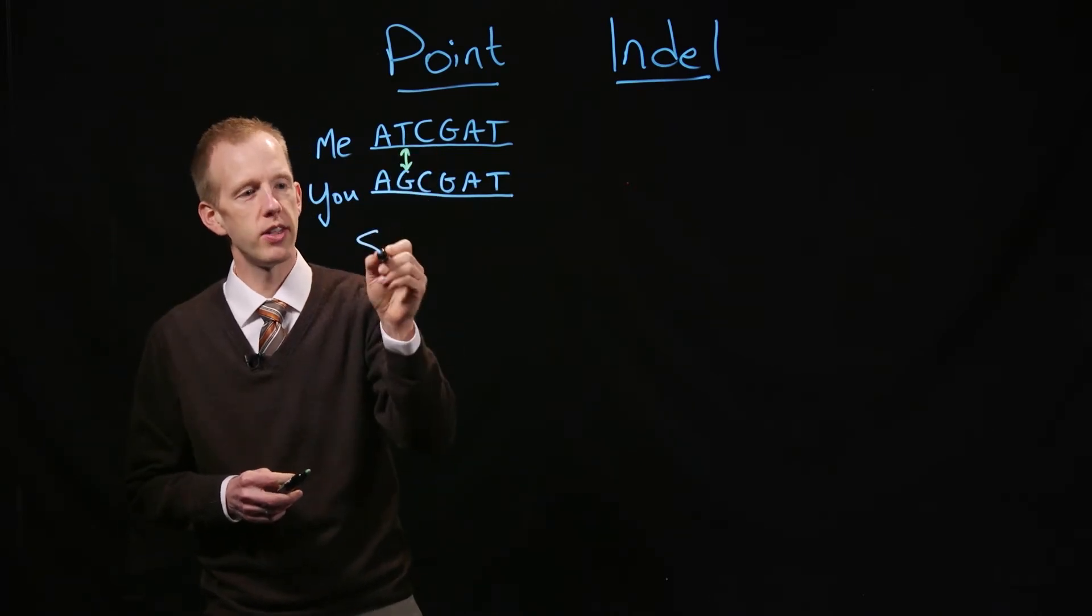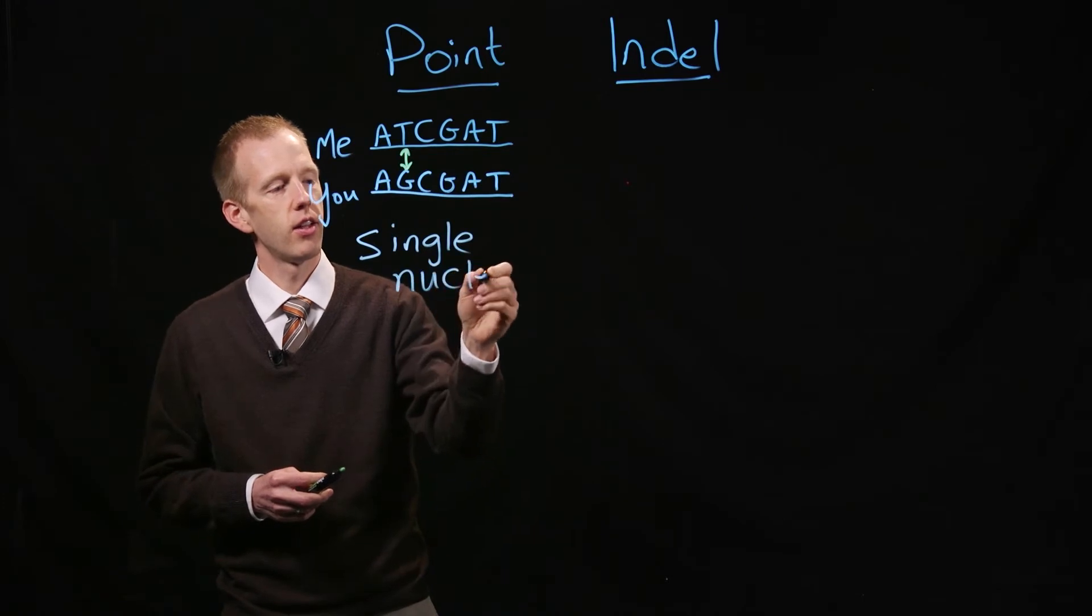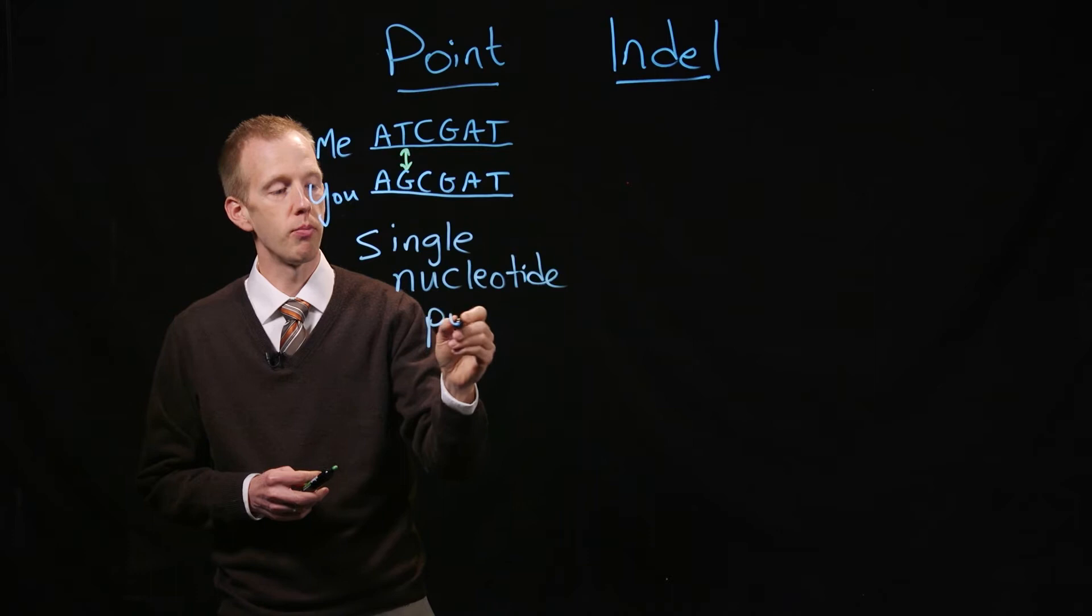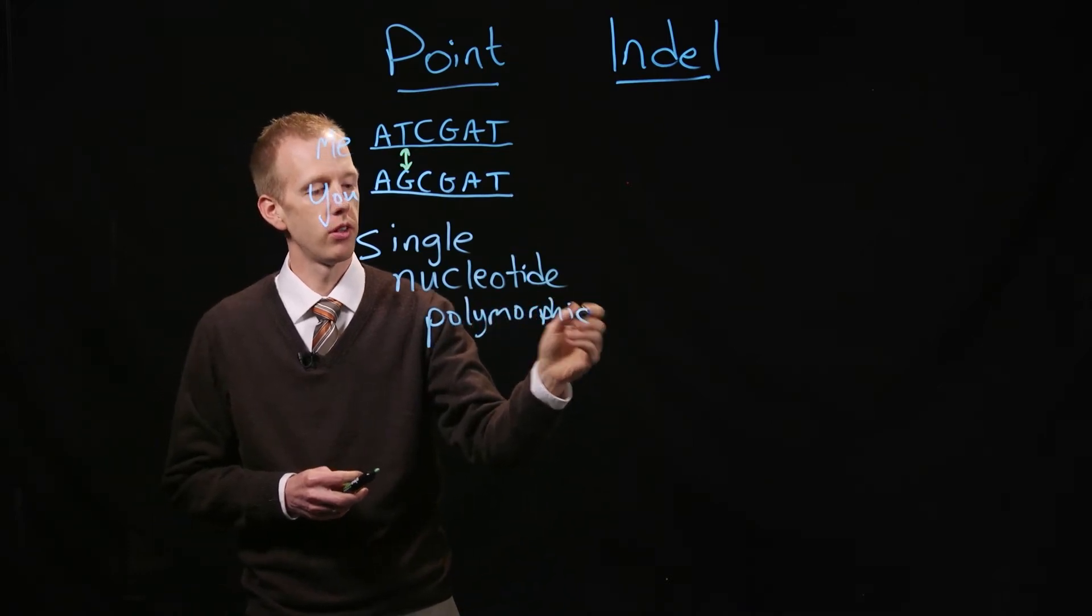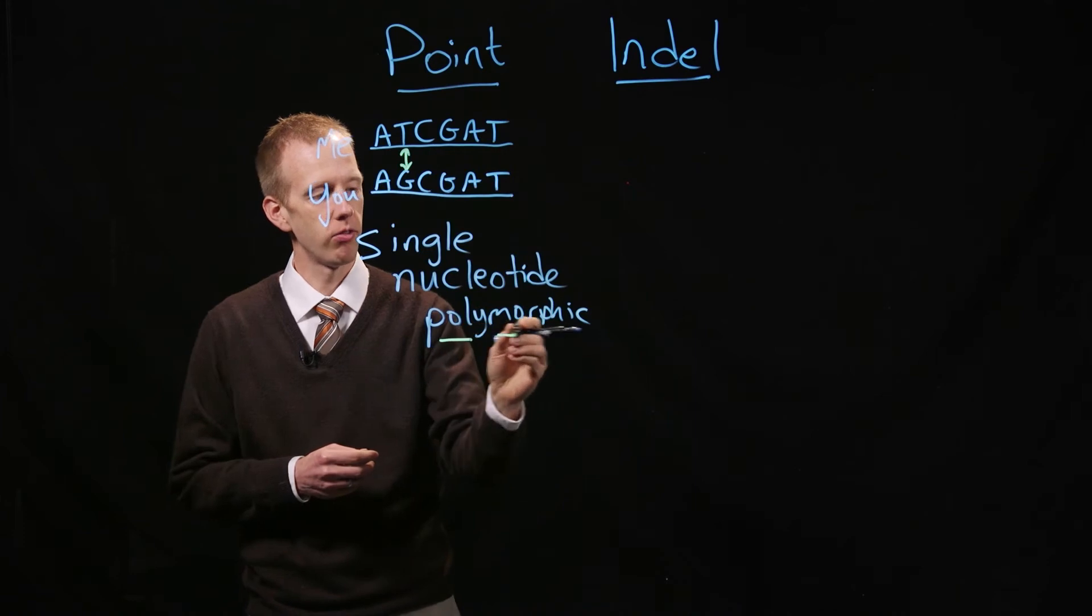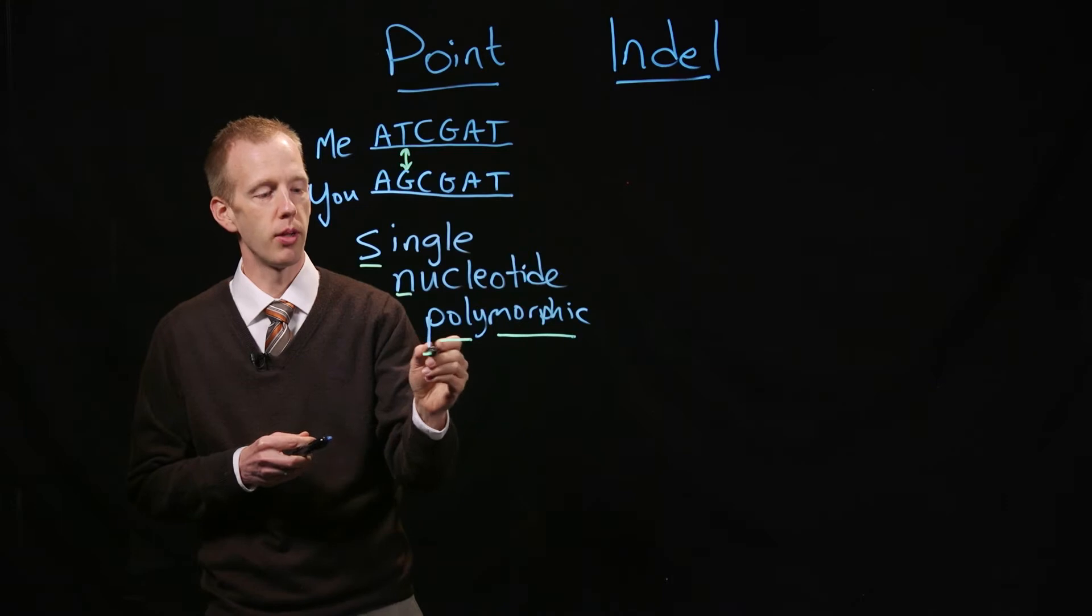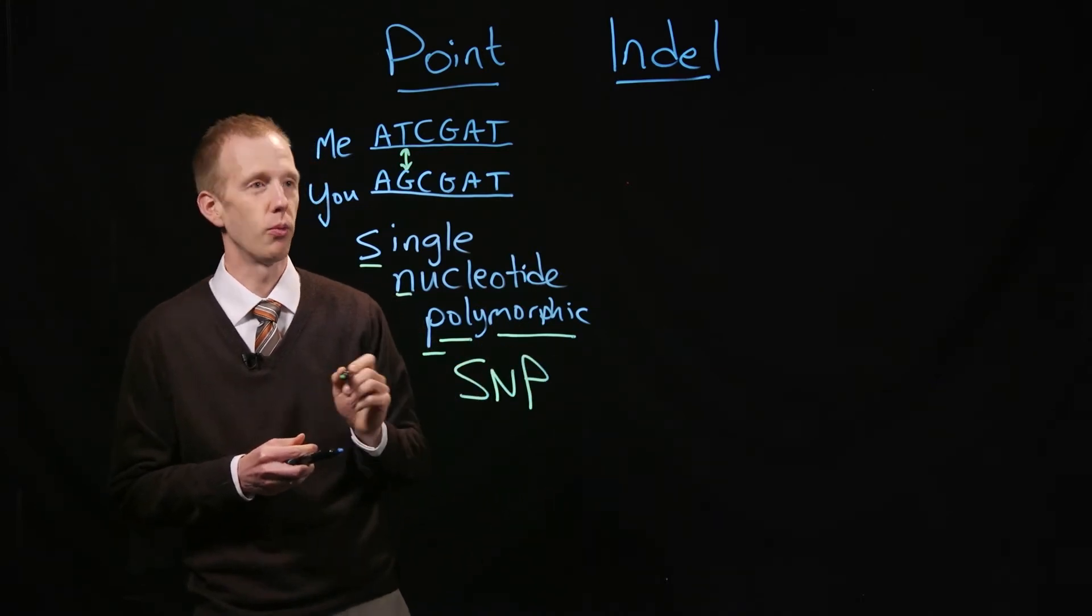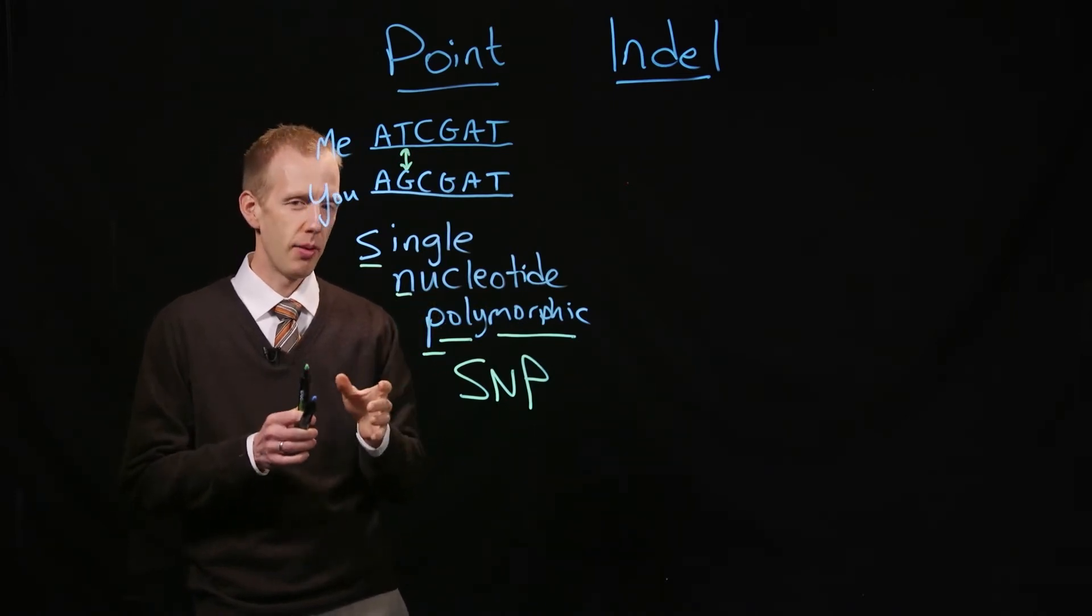There's one single nucleotide that's different, and the word that geneticists use for that is polymorphic, that has many forms. So this is an example of a single nucleotide polymorphism, or SNP, the way we refer to it. Now this is one type of mutation.